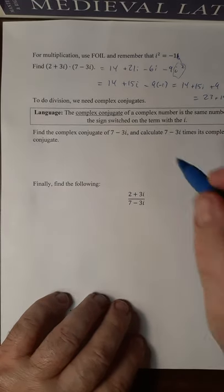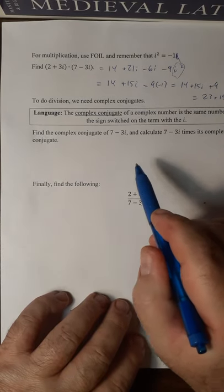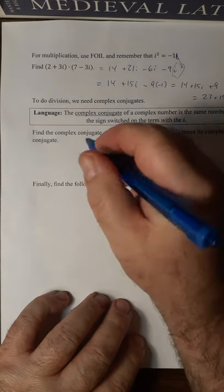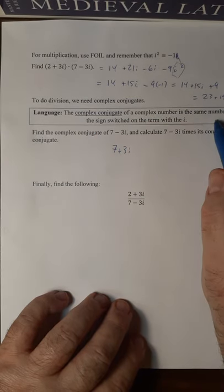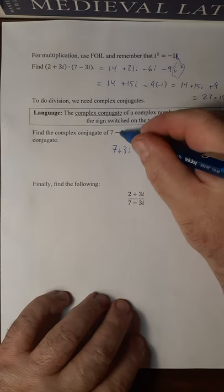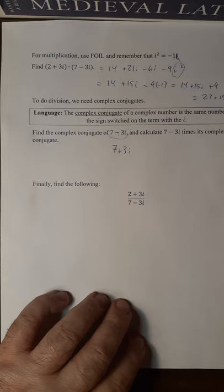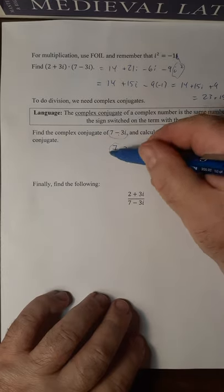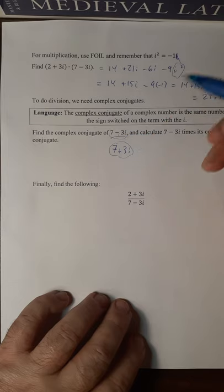Now to do division, we need something called a complex conjugate. So if 7 minus 3i is a number, what's the complex conjugate? Complex conjugate, just take the same number and switch the sign on the i. So the complex conjugate of 7 minus 3i, you take the minus and turn it into plus, is 7 plus 3i. Complex conjugate of 7 plus 3i, you take the plus, turn it into minus, you get 7 minus 3i.